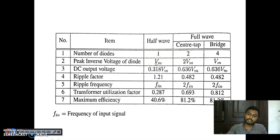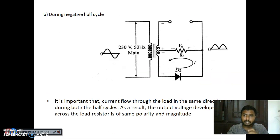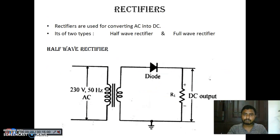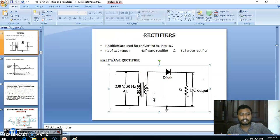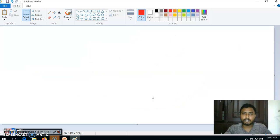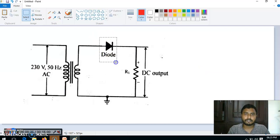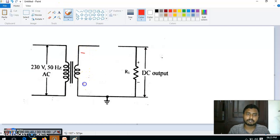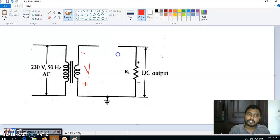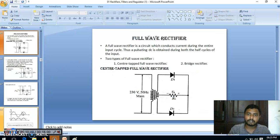The peak inverse voltage is one important concept. It is nothing but when the diode is not conducting — what is the voltage across that diode? That is the peak inverse voltage. Take the half wave rectifier case: when the diode is not conducting, the polarity is negative here and positive here, and that voltage we represent as V. Since there is no current through RL, the voltage across RL is zero, and the same V voltage appears across the diode. So the peak inverse voltage of a half wave rectifier is V.